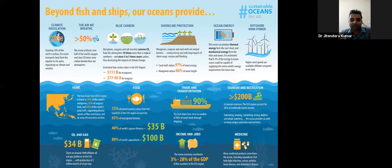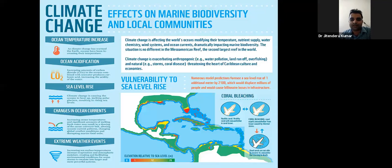Apart from fish consumption, the marine area — the sea — provides a lot of things to us. More than 50 percent of the total oxygen is produced from the ocean. It also provides a lot of protection to coastal people through habitats like mangroves and sea grass, which protect the coastal area.